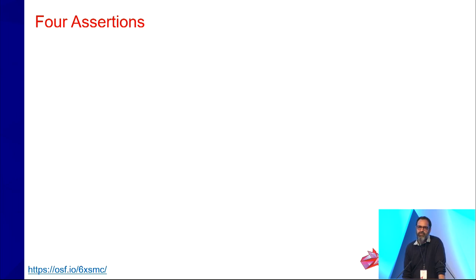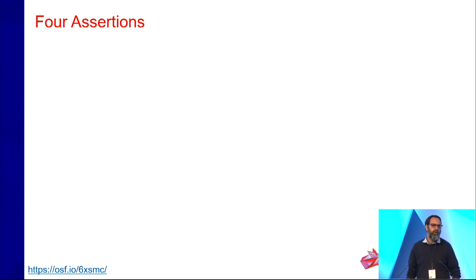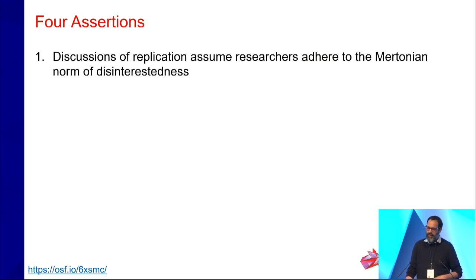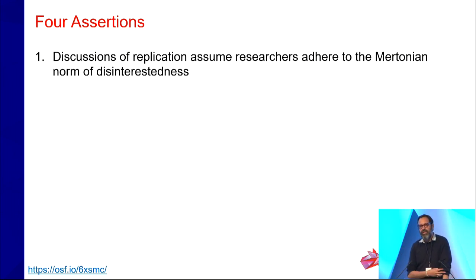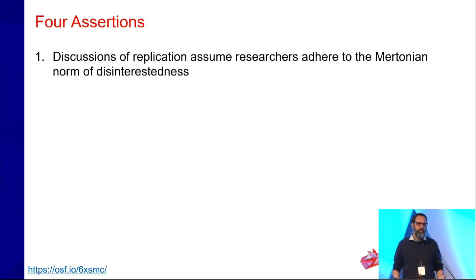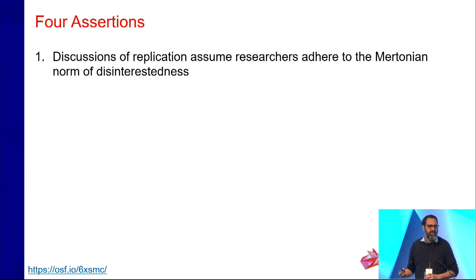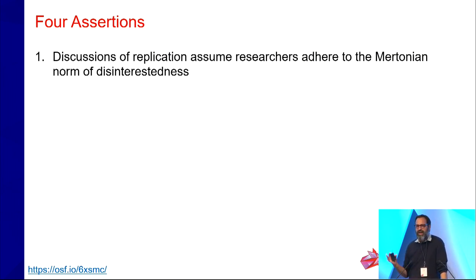With those definitional issues in mind, I want to get to four assertions based on my observations of the evidence. First, discussions about replications often assume research occurs in a vacuum — that researchers aren't motivated parties. Nosek's talk this morning outlined how that's not the case: we have individual personal motivations. We saw this clearly in the early days of the replication crisis, where people responded variably to evidence for or against particular findings. We have to think about these underlying motivations.